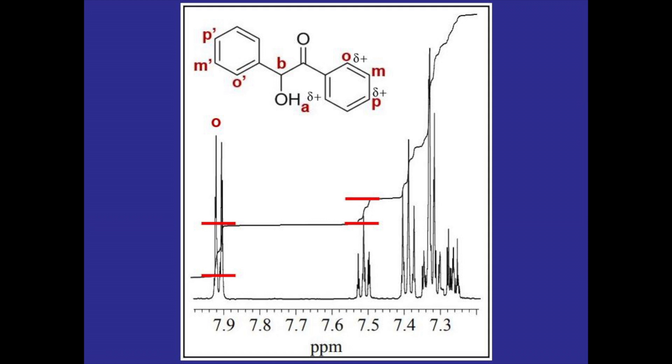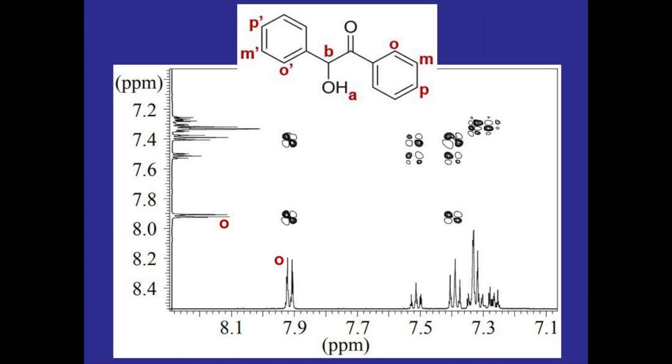Plus it's the next most deshielded hydrogen so we could argue that that would be hydrogen P but the 2D NMR takes away all argument or debate and can tell you exactly which hydrogens are which so I'm going to show you how to use that.